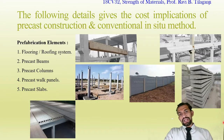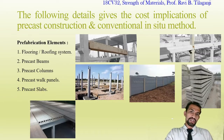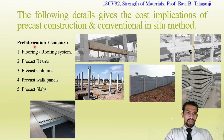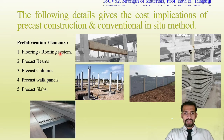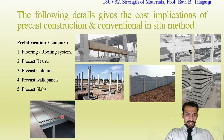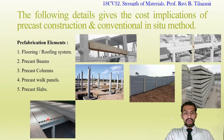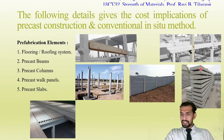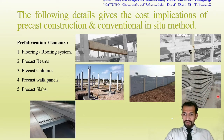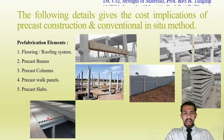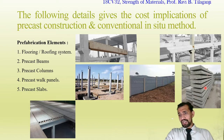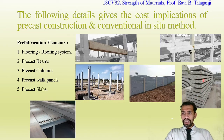Now let us look at the cost implications of precast construction versus conventional in-situ methods, and what the prefabrication elements are. The first type shown is flooring or roofing systems — these figures show elements that can be used as both roof and floor for the upper layer, also known as precast slabs.